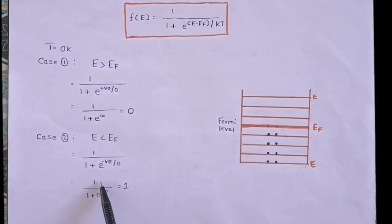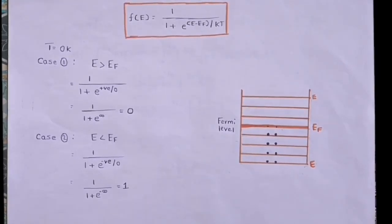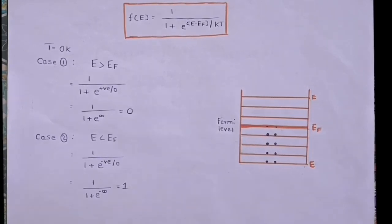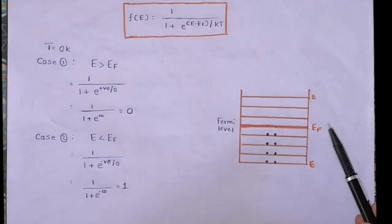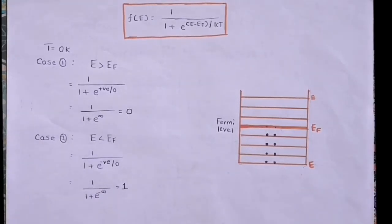This gives F(E) = 1 / (1 + e^(−∞)) = 1, which tells us that the probability of finding an electron below the Fermi energy level is 100%. Similarly, if the energy level is above the Fermi energy level, then F(E) = 0, meaning the probability of finding an electron above the Fermi level is 0.